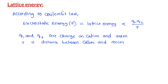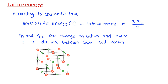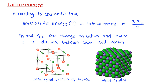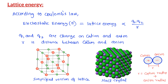In the earlier video, we saw an image of a crystal lattice. However, that is an oversimplified version of a crystal. In reality, the ionic crystal looks like the following. In a crystal lattice, the cations and anions are packed right next to each other. Therefore, the distance between them is equal to the sum of the ionic radii of the cation and anion.